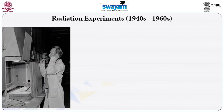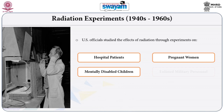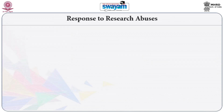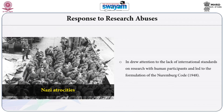In the case of radiation experiments in the 1940s to 1960s, US officials studied the effects of radiation through experiments on hospital patients, pregnant women, mentally disabled children, and enlisted military personnel. Few participants gave informed consent; most had no knowledge they were being subjected to radioactive materials. As a response to these research abuses, some major decisions were taken. Nazi atrocities in World War II drew attention to the lack of international standards on research with human participants and led to the formulation of the Nuremberg Code in 1948.